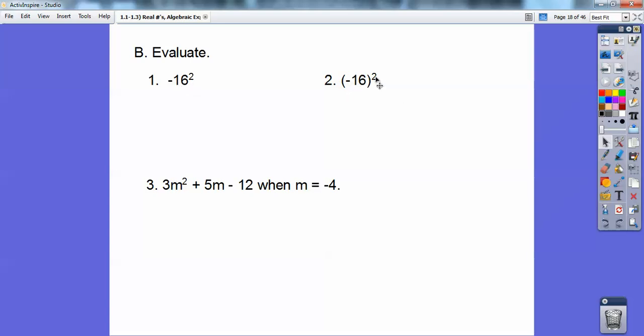So this one's going to get me a negative 256. This one's going to get me a positive 256. Can you see why? This negative wasn't being squared. So it's going to hang out to be negative no matter what. And this negative is being squared, and the negative that's being squared is always positive.